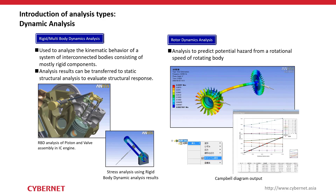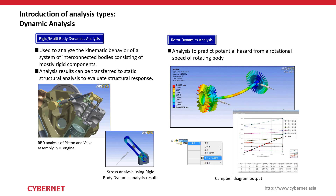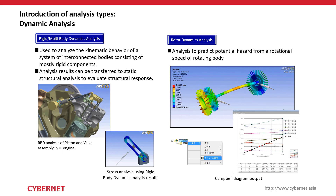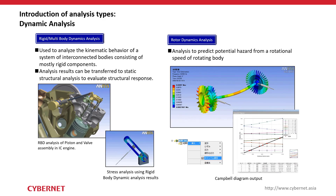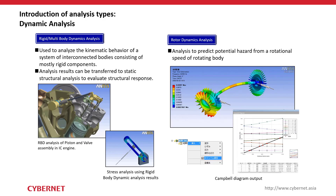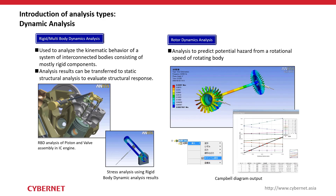Rotor dynamic analysis is used for products involving rotation during operation. It predicts potential hazards from the rotational speed of a rotating body and generates a Campbell diagram as output, from which you can evaluate results such as critical rotational velocity.